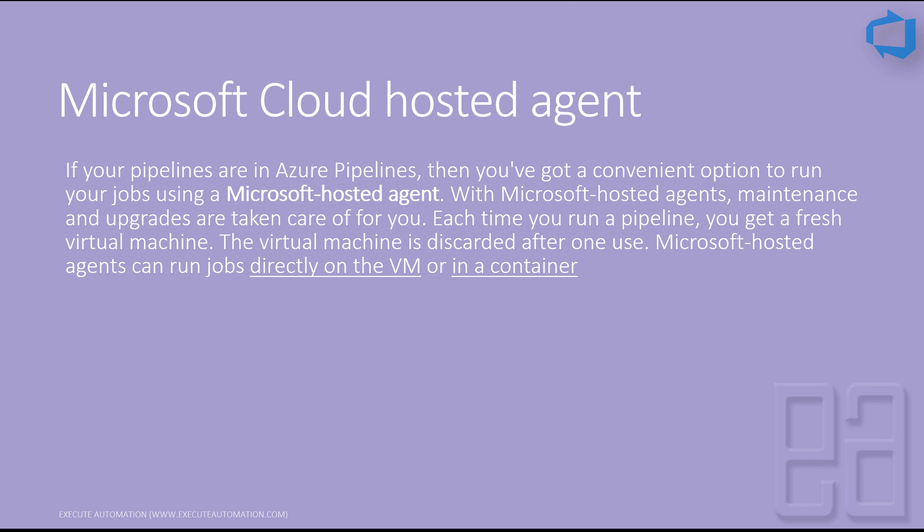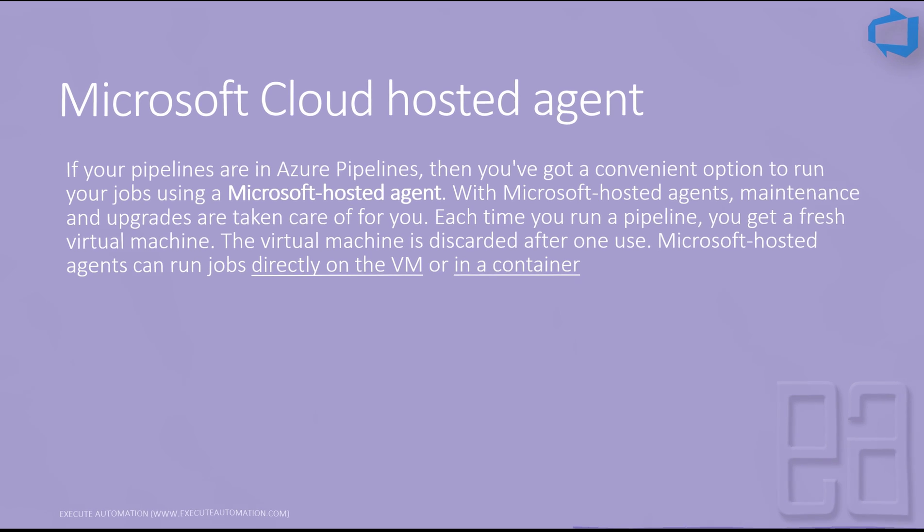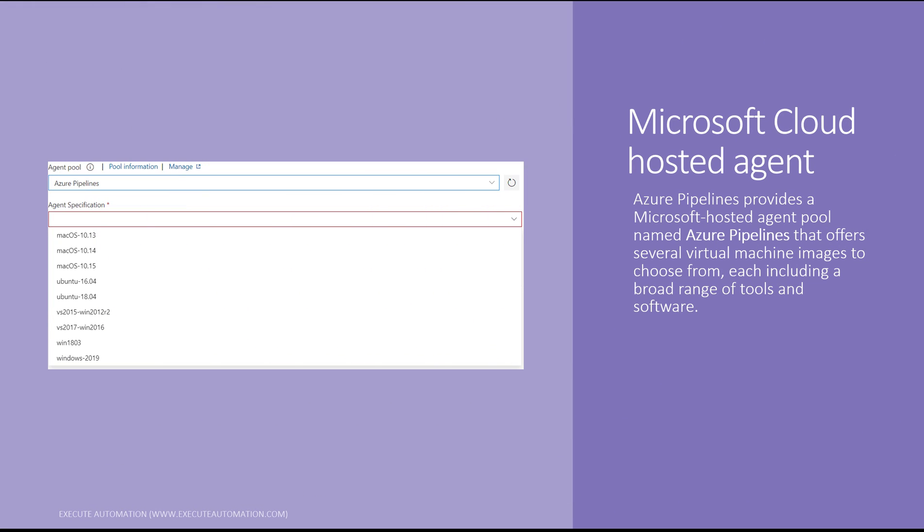Each time you run a pipeline you get a fresh virtual machine, and that VM is discarded after one use. Microsoft hosted agents can run jobs directly on the virtual machine or even in a container. You can use this Microsoft cloud hosted agent within your project for both building and deploying your application.